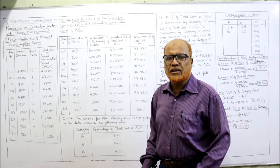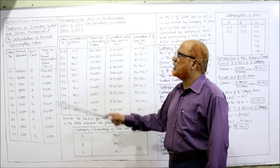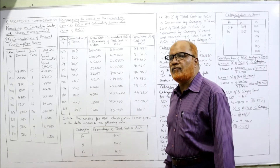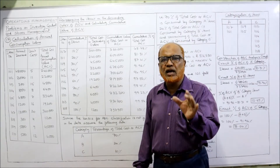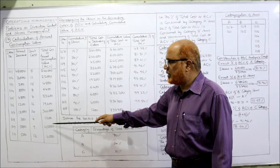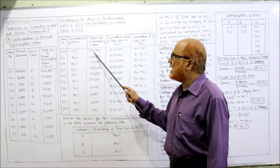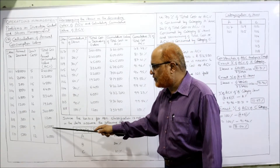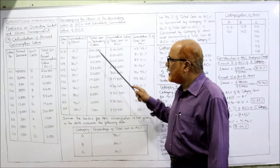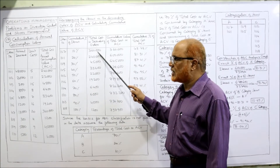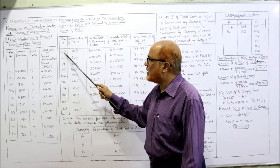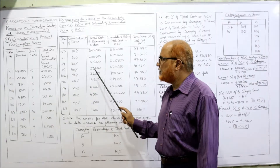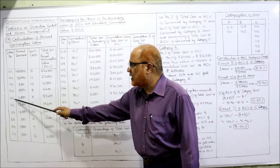The second table involves rearranging all items in descending order of ACV and calculating the cumulative value of ACV. The highest cost is 3,60,000 — item 107. Second highest is 2,40,000 — item 101. Third is 45,000 — item 109. Then 33,600 — item 105. We arrange all 10 items in descending order of ACV this way.